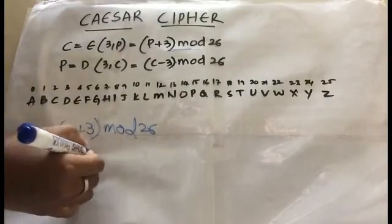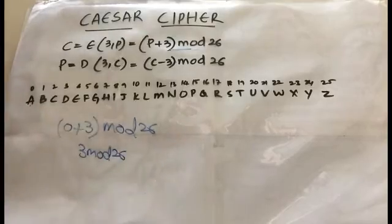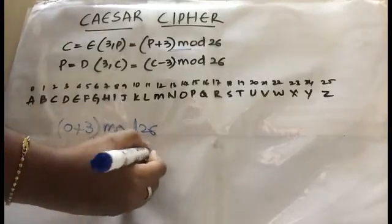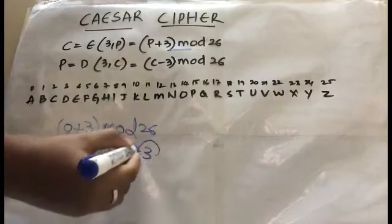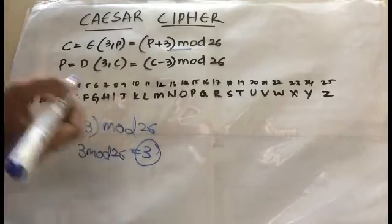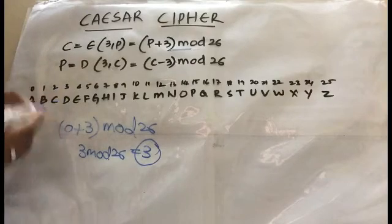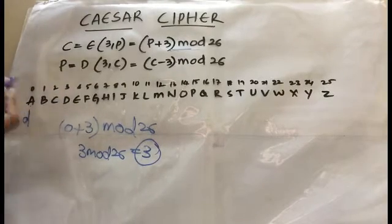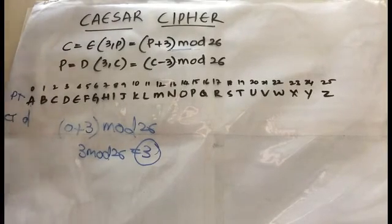0 plus 3 is simply 3, and 3 mod 26 is 3. The alphabet at position 3 is D. So D is the corresponding ciphertext for the plaintext A.